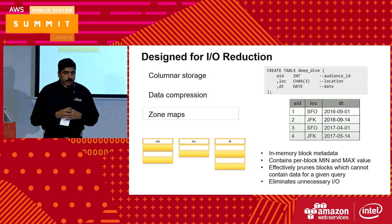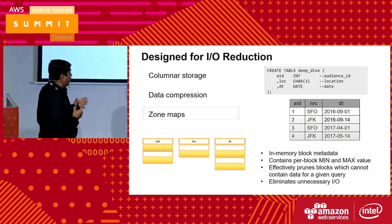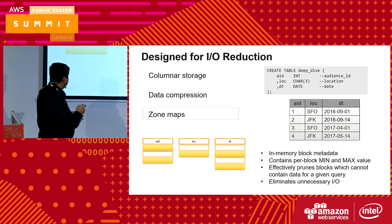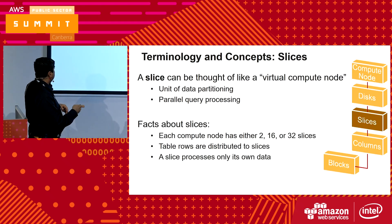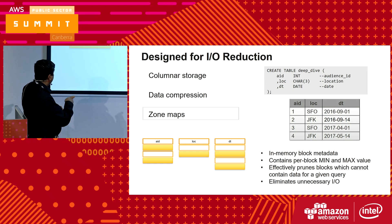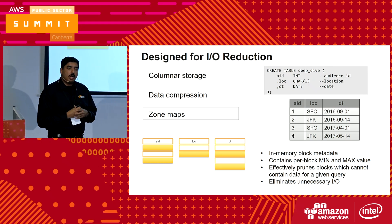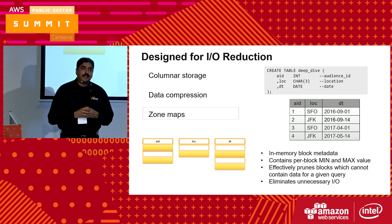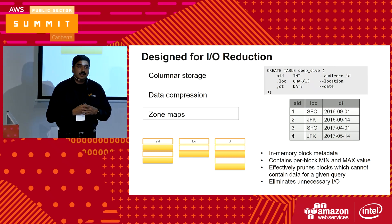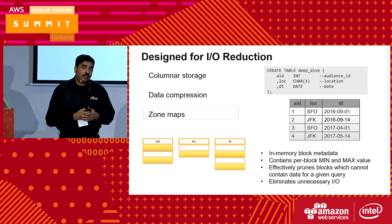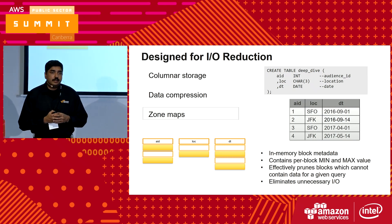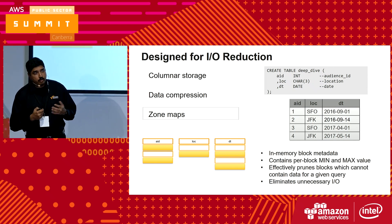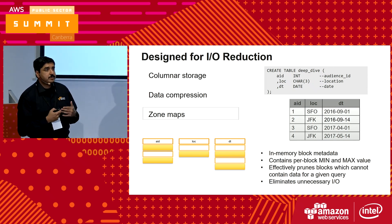The third important thing for I/O reduction is zone maps — in-memory block metadata. They contain per-block minimum and maximum values. Each block stores its minimum and maximum value, so when a query runs through the blocks, it can skip blocks that don't contain the relevant data, reducing unnecessary I/O. It's very important to define sort keys for your table, which improves performance because once your data is sorted, your zone maps work far better.